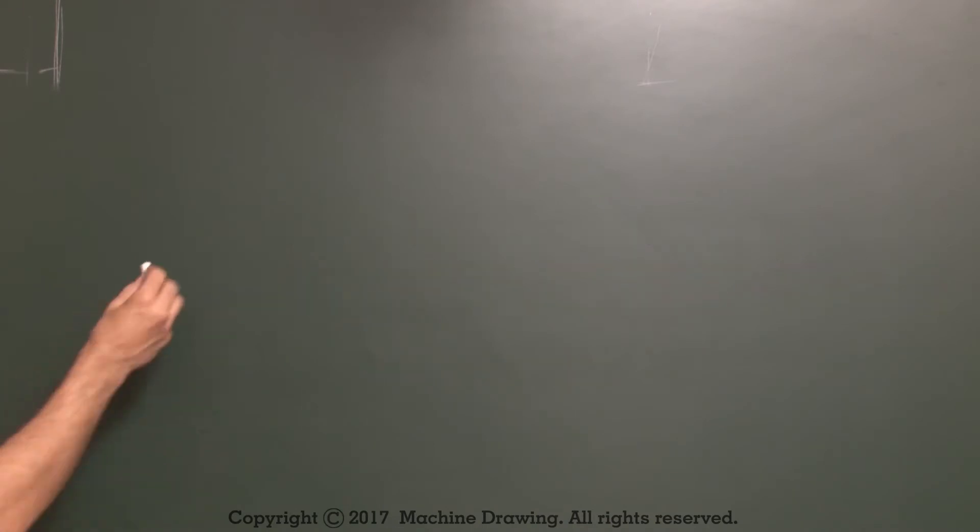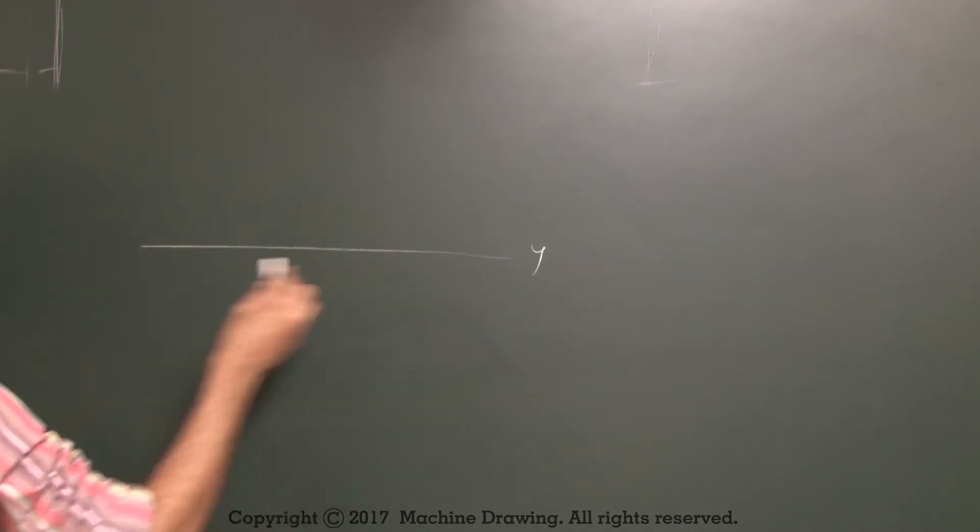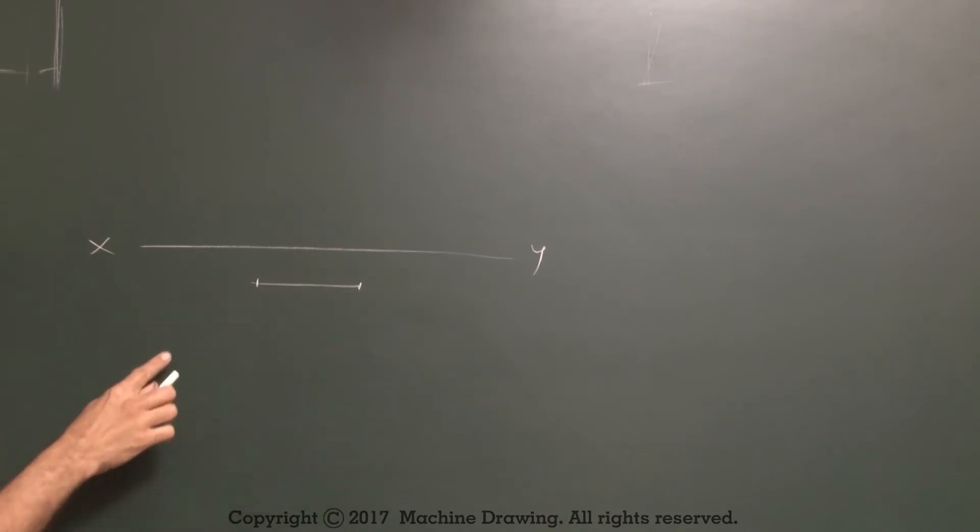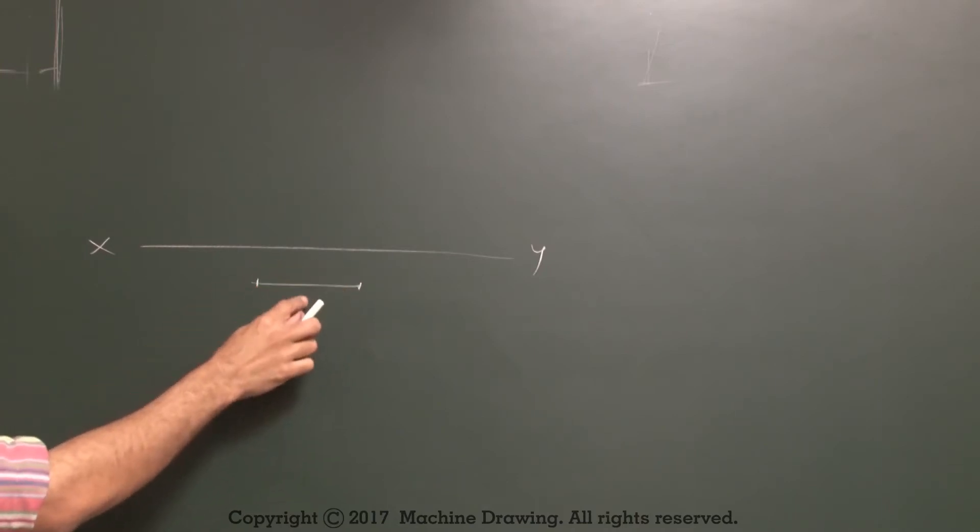So first we will draw XY line. We will draw pentagon. They have said that one of its sides is parallel to and nearer to VP. So this line is parallel to and nearer to VP. We will draw pentagon.